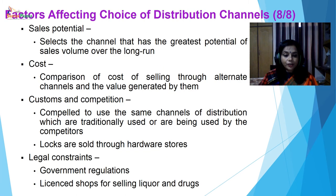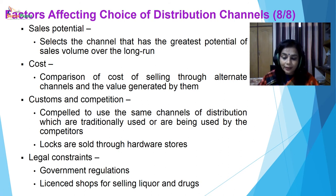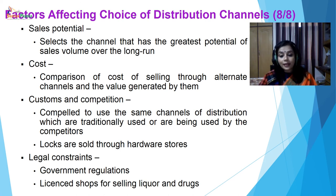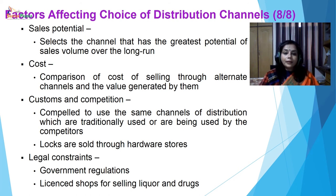Other factors include sales potential: select the channel that has the greatest potential of sales volume over the long run. Then cost consideration: comparison of cost of selling through alternate channels and the value generated by them. Then customs and competition: manufacturers are sometimes compelled to use the same channel of distribution which is traditionally used or being used by competitors — for example, locks are sold through hardware stores. There are also legal constraints like government regulations: you can sell liquor and drugs through licensed stores only.